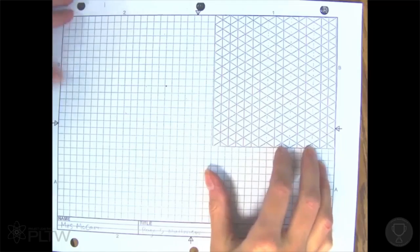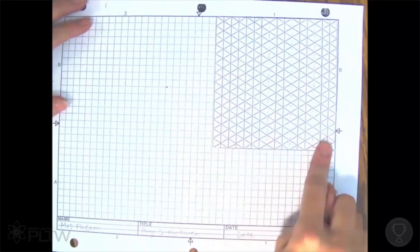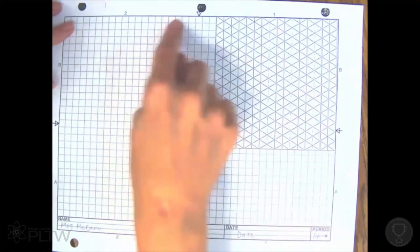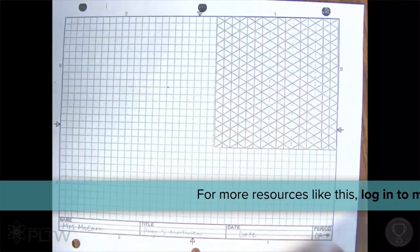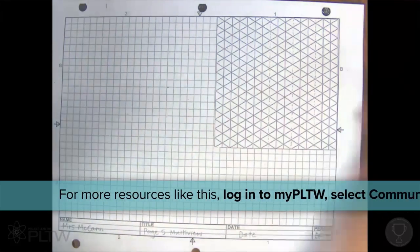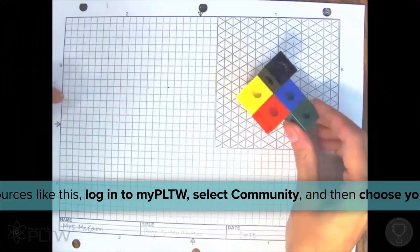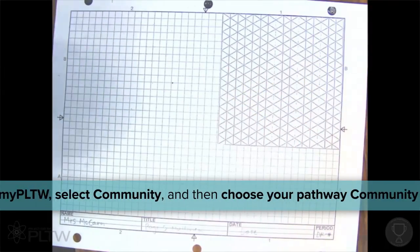We know that this is multi-view paper because in the corner we have isometric paper, and then the rest of the paper is the square Cartesian grid. We're going to start out by drawing an isometric of this shape right here in our isometric paper.